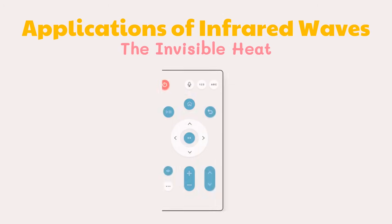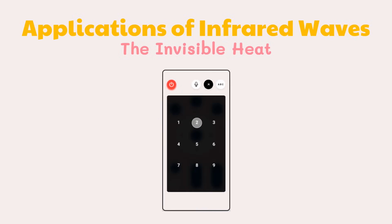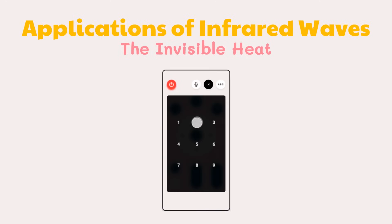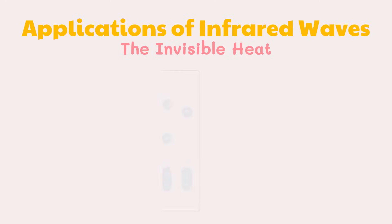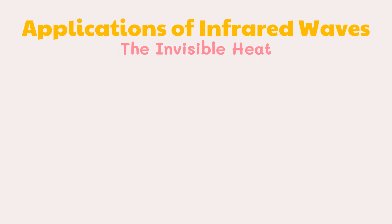The human eye is not sensitive to the infrared light used by television remote controls. To send a signal to a television, remote controls often use a diode that emits light. Some digital cameras have filters to block near-infrared light, but most can detect it and it shows up on the screen as if it were visible light. When you press a button on the remote control, the camera may show a pulsing light emitted by the remote.